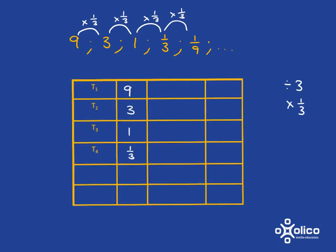If we put it in a table, we can then see, like we did last time, that the first term is just 9, and the second term is that 9 but then multiplied by a third.